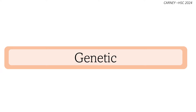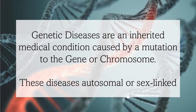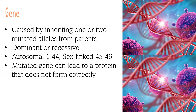Genetic diseases are inherited medical conditions caused by a mutation at the DNA level or chromosomal level. Inheritance patterns of these diseases can be classified as autosomal or sex-linked and inherited in a dominant or recessive manner. Genetic diseases caused by a faulty gene are caused by a mutation at the DNA level. It is important to know that not all mutations are a disadvantage — some mutations can provide an advantage to an organism. Gene mutations can be expressed dominantly; for example, Huntington's disease. If one parent has a copy of the mutated allele, this will be passed on to their offspring.